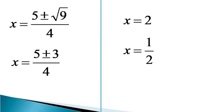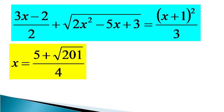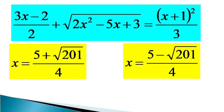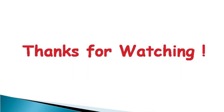So the given equation has four roots: x equals (5 plus root 201) divided by 4, x equals (5 minus root 201) divided by 4, x equals 2, and x equals one half. It can be verified that all four roots satisfy the given equation and hence these are the solutions. Thanks for watching.